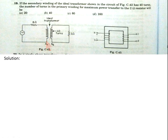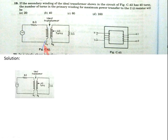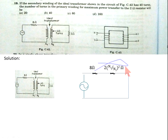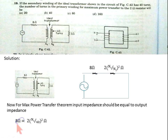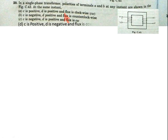Now come to the solution. This is the circuit of an ideal transformer where the 2 ohm resistance is referred from secondary to primary. For maximum power transfer, the input resistance should be equal to the load resistance — so 8 ohm should be equal to the referred resistance. Solving this equation, we get N1 equals 80 turns, so option C is the correct option.